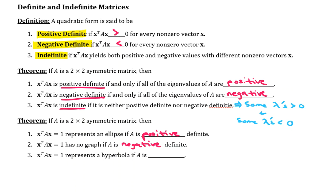X transpose AX is going to represent a hyperbola if A is indefinite. So what that means is that if you get some eigenvalues that are positive and some eigenvalues that are negative, of course if this is a two by two symmetric matrix, if you get one eigenvalue is positive and one is negative, then the quadratic form is considered indefinite. And we would know in advance that the conic section that it corresponds to would be a hyperbola.